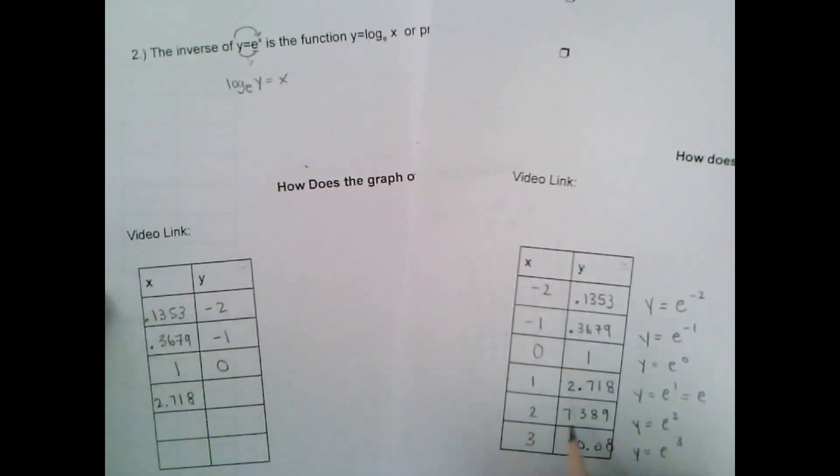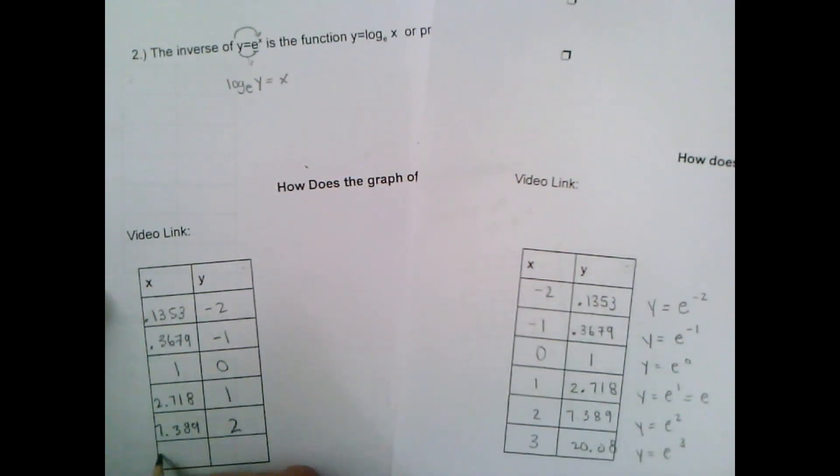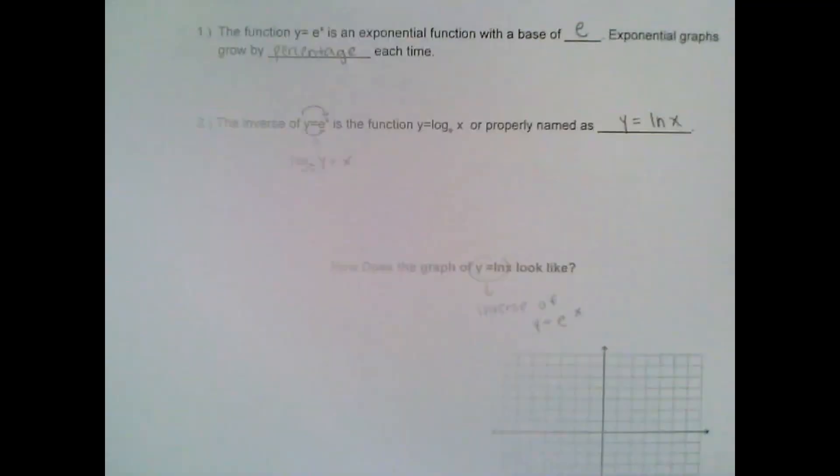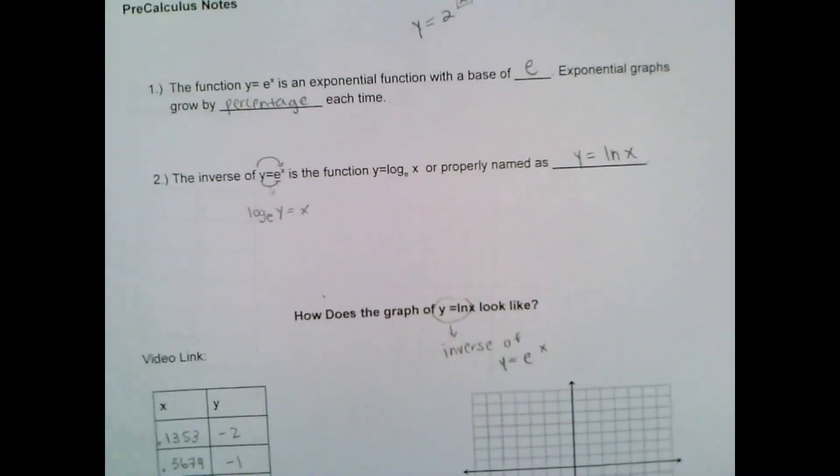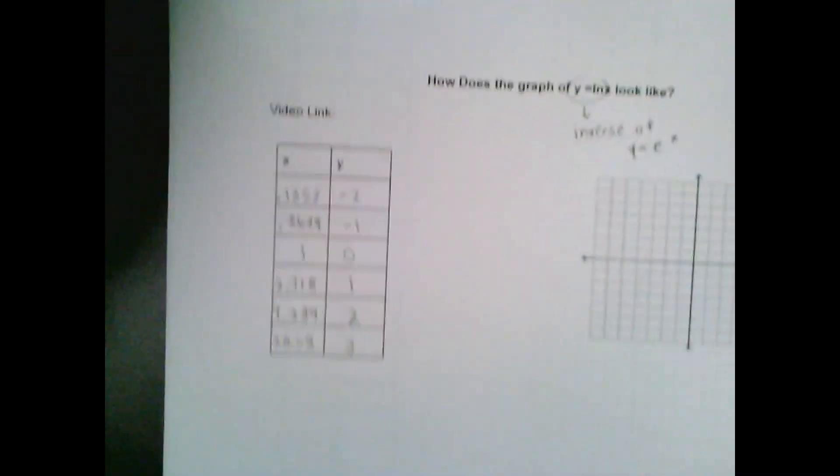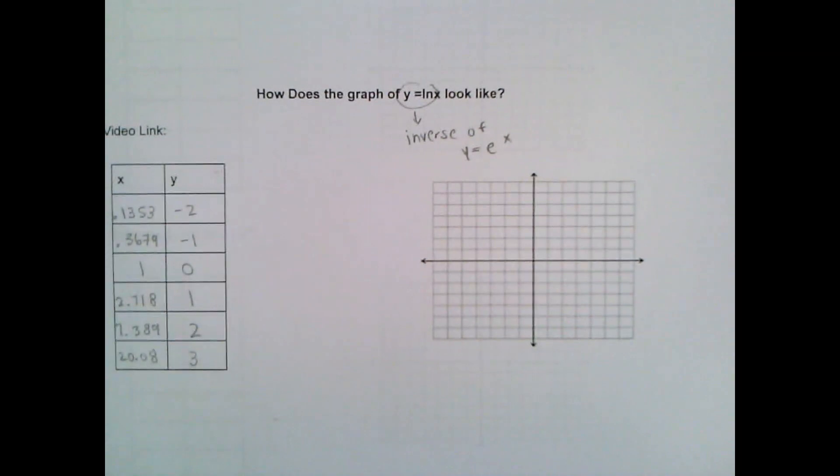And that's 1, 0, 2.718 is 1, 7.389 is 2 and then we got 20.08 which is just 3. Okay so again this was me using the old data table and I'm hoping because I didn't staple mine but yours is pretty much stapled so you're going to probably have to look back and copy it on your own. Alright so let's go ahead now and graph this and see what the ln x function looks like.